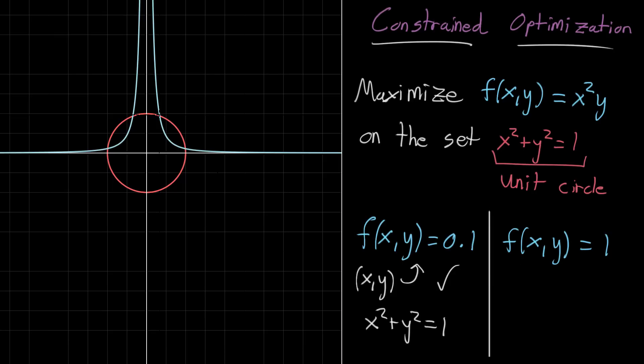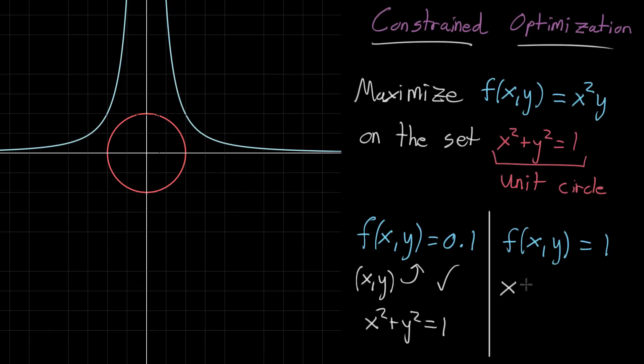But on the other hand, if we look at this other world, where we shift up to the line f of xy equals one, this never intersects with the constraint. So what that means is xy, the pairs of numbers that satisfy this guy are off the constraint. They're off of that circle, x squared plus y squared equals one.